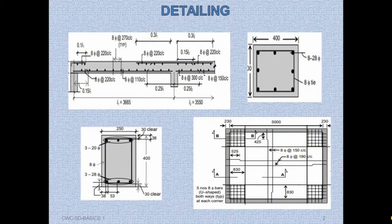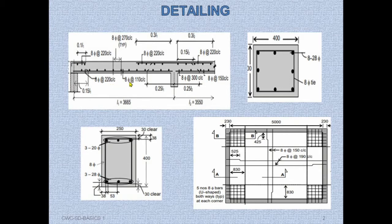Here are some drawings which show the reinforcement detailing. This is a one-way slab sectional drawing. Here you can see a bar marked as 8Φ at 220 center to center, which means 8 mm diameter bars placed at a center-to-center distance of 220 mm. Similarly, another notation reads as 8 mm dia bars placed at a center-to-center distance of 110 mm.